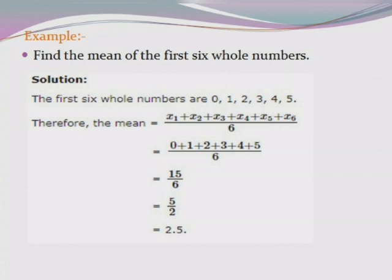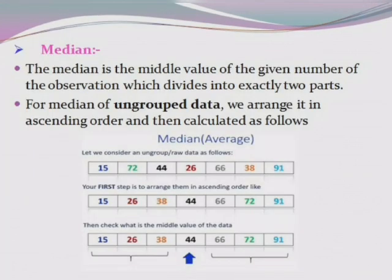Now we work through one example: find the mean of the first six whole numbers. The six whole numbers start from zero: 0, 1, 2, 3, 4, 5. Mean = sum of observations / number of observations = (0 + 1 + 2 + 3 + 4 + 5) / 6 = 15 / 6 = 5/2 = 2.5. So the mean of the first six whole numbers is 2.5.